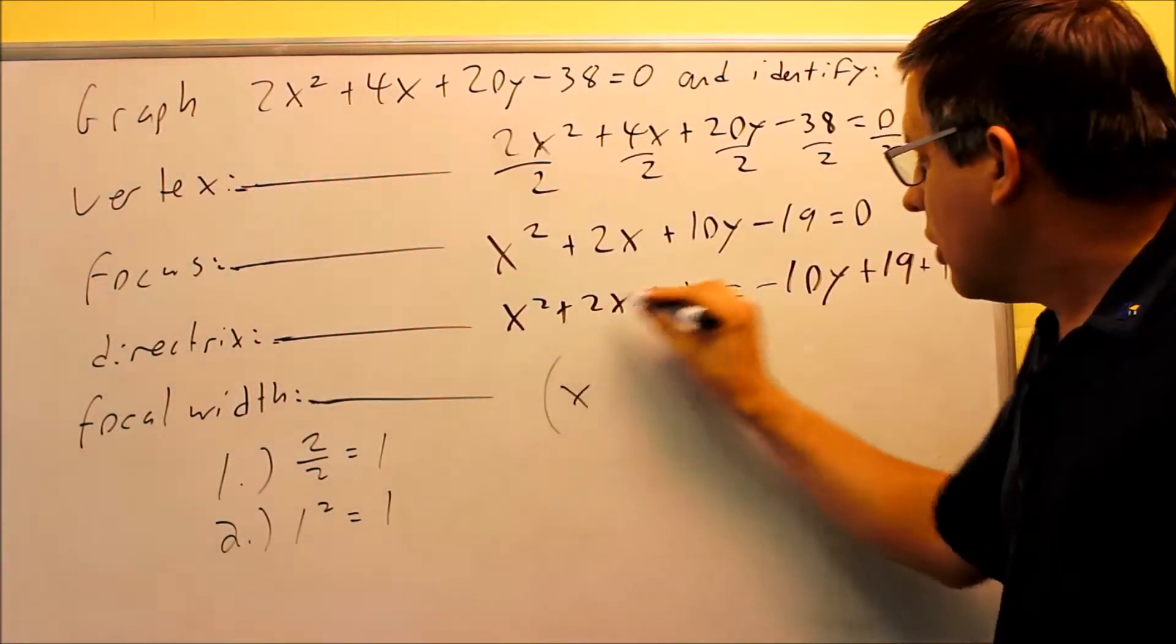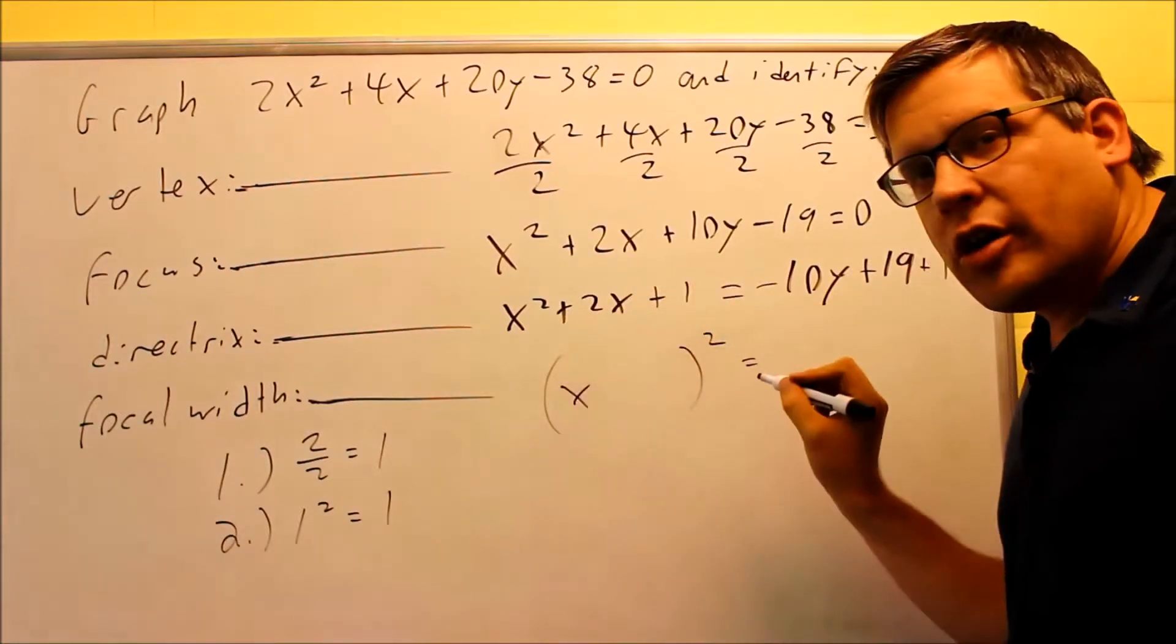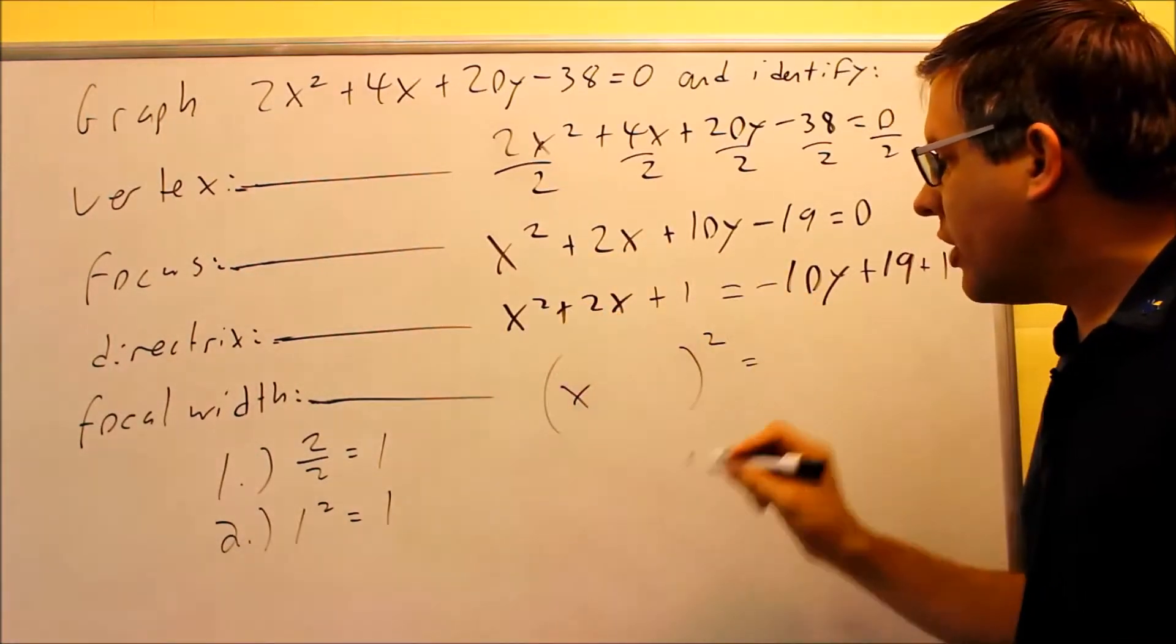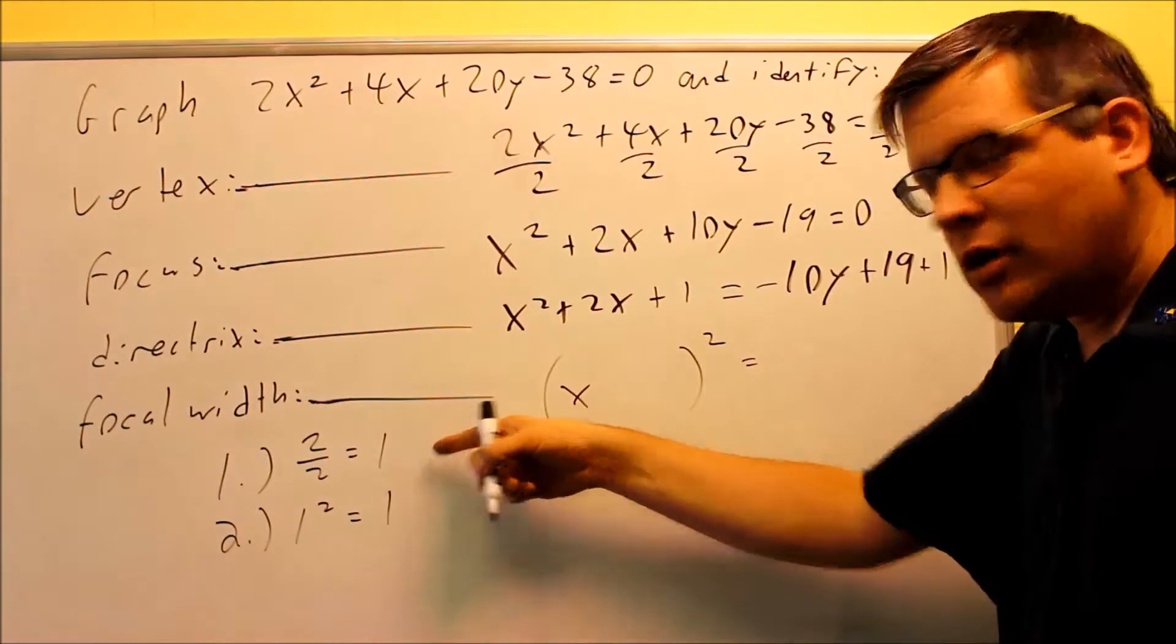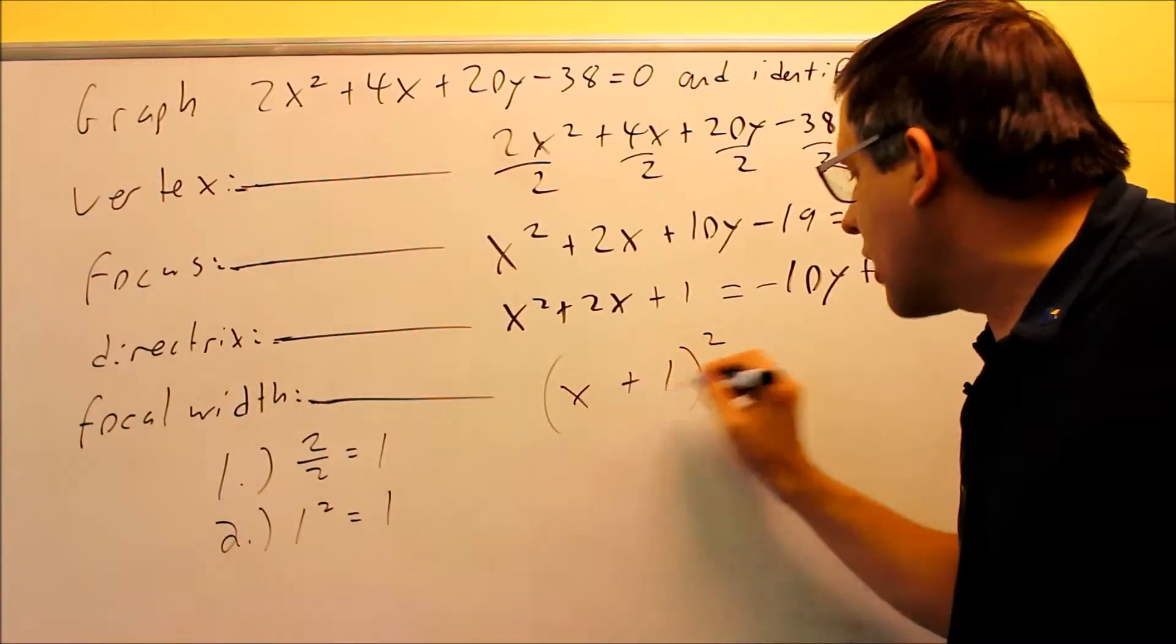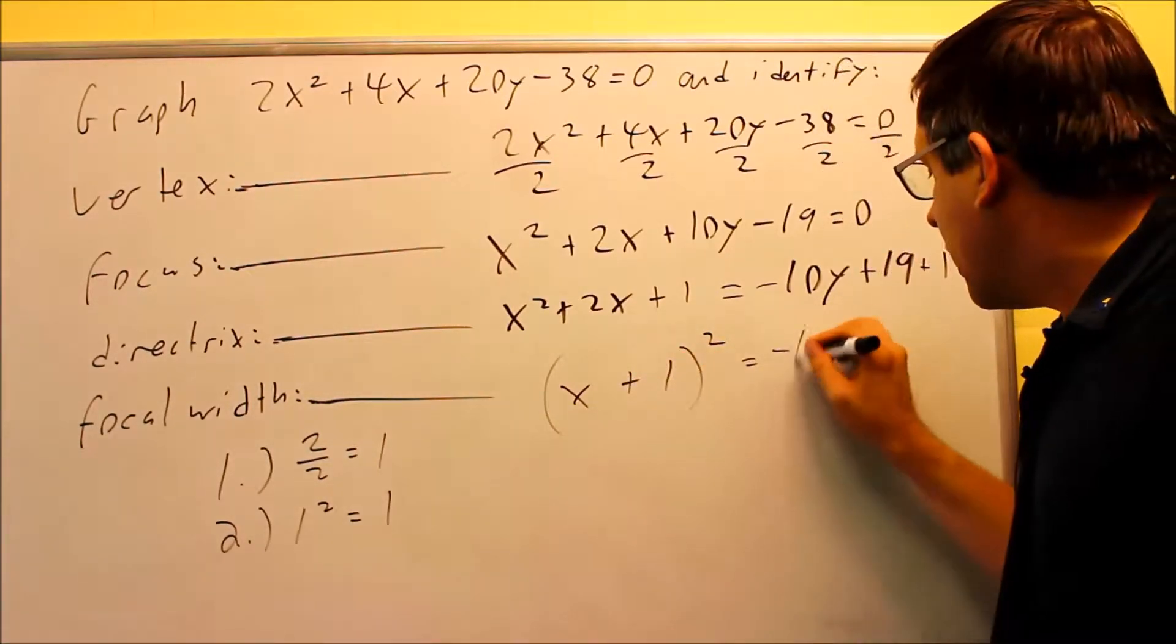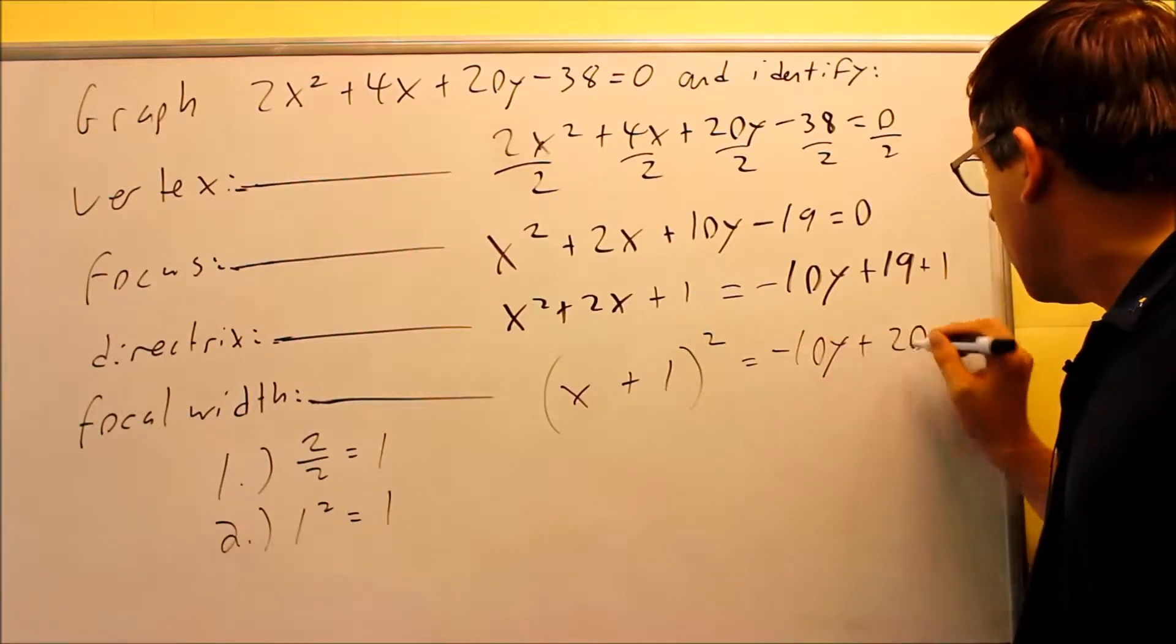That allows us to now write this as a quantity squared. We created our perfect square. The answer you get in step number 1 is what goes inside the parenthesis here, so that's going to be x plus 1. Over here we get negative 10y plus 20.